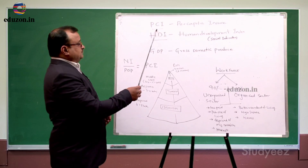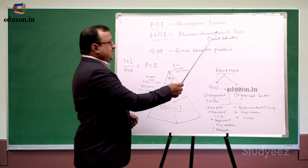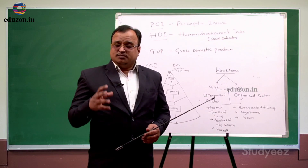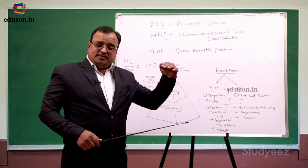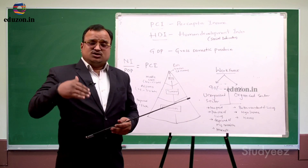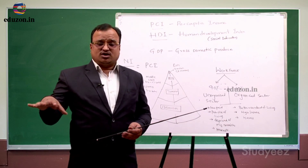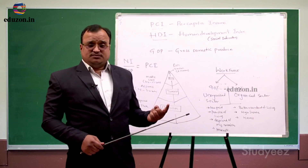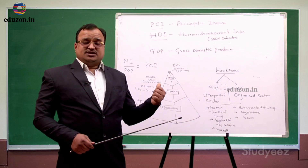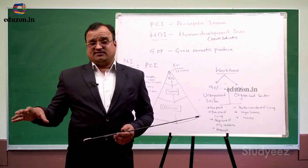But other than per capita income, we have another indicator called HDI — Human Development Index — which is a social indicator. Human Development Index studies not only the economic and production status of a country, but also calculates the other facilities which citizens are availing: socio-economic facilities such as education, literacy rate, sex ratio, housing ratio, and urbanization ratio. All these factors put together form the Human Development Index.